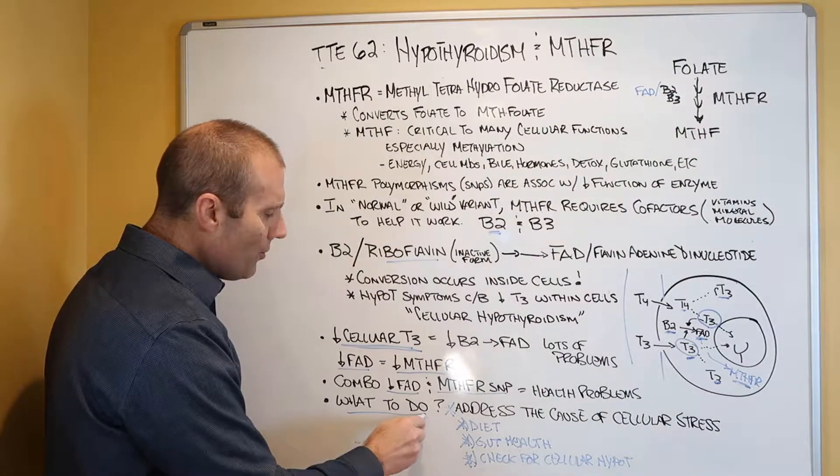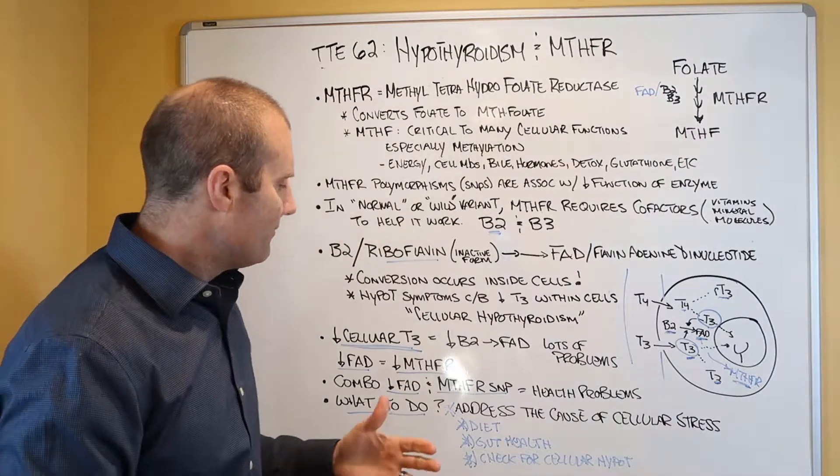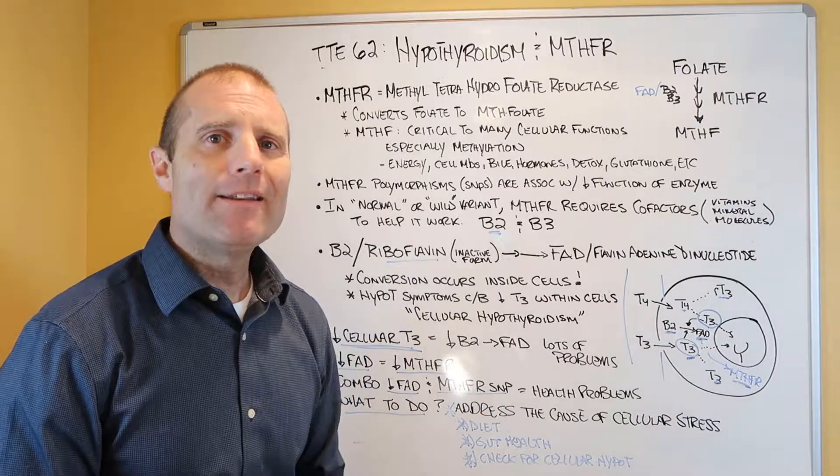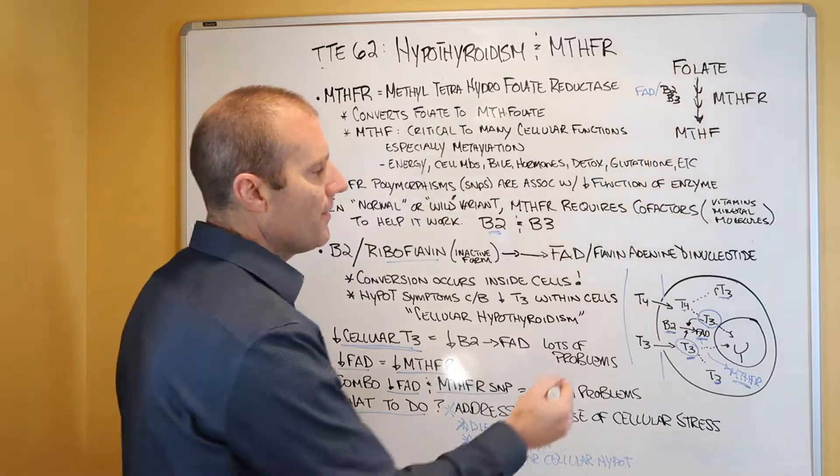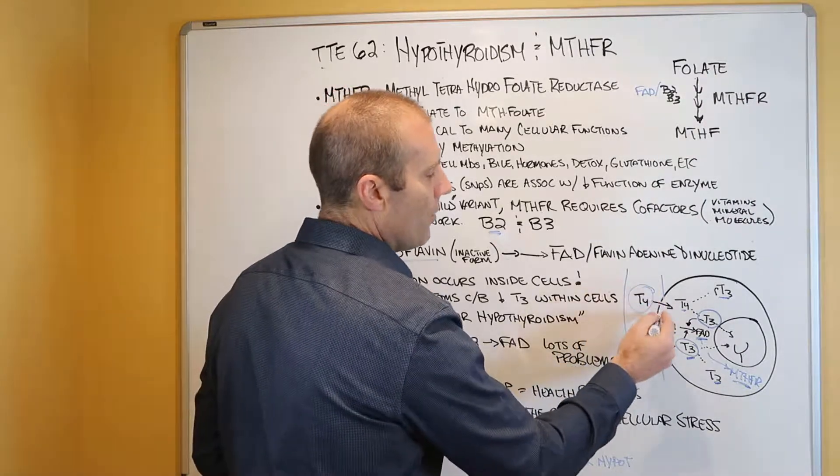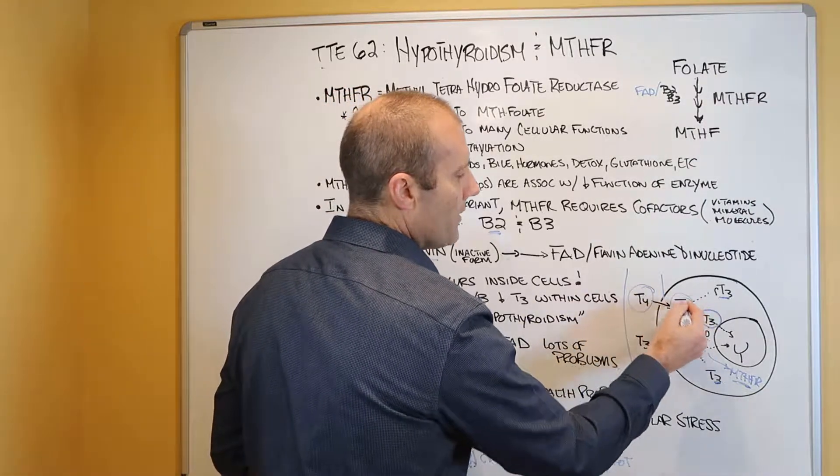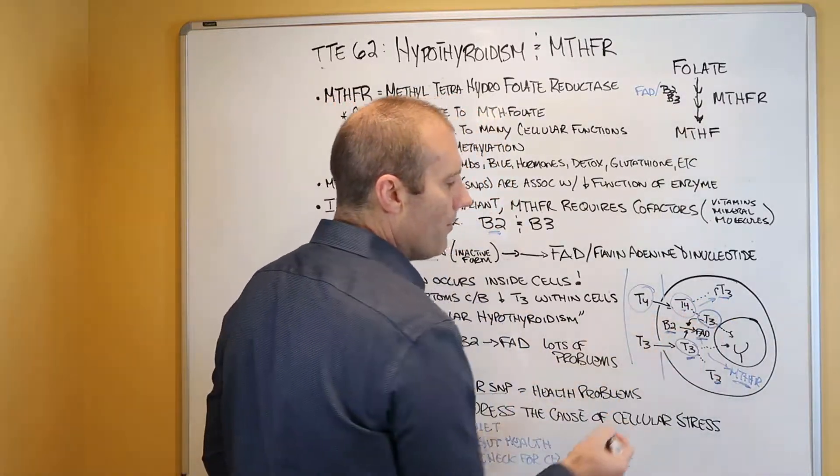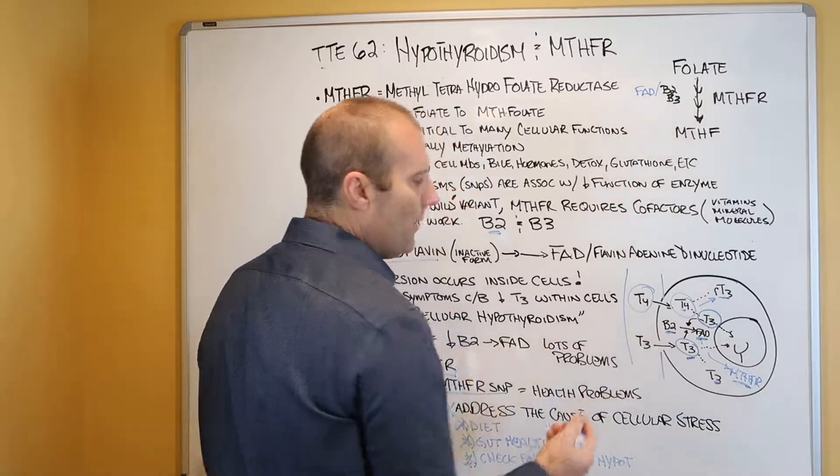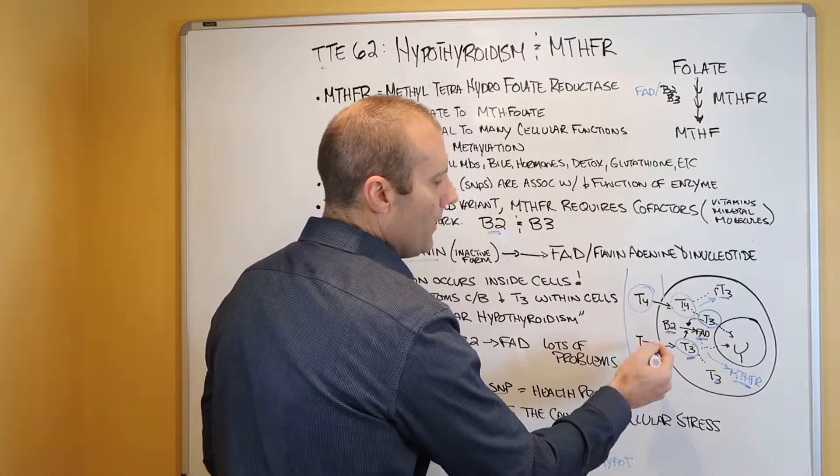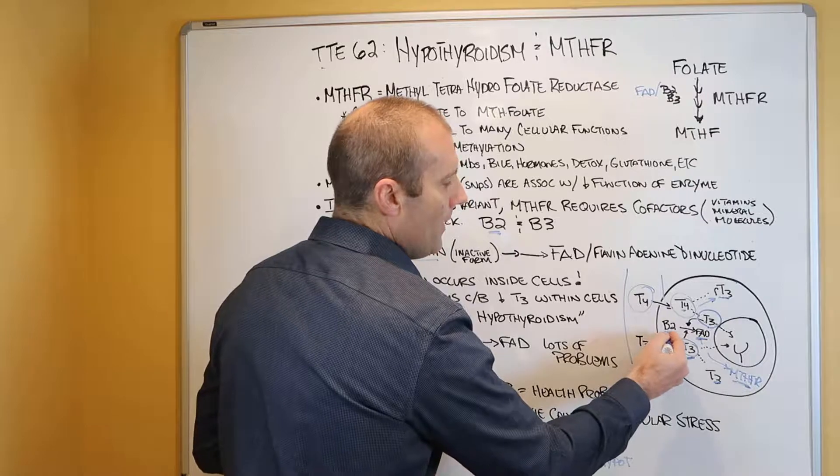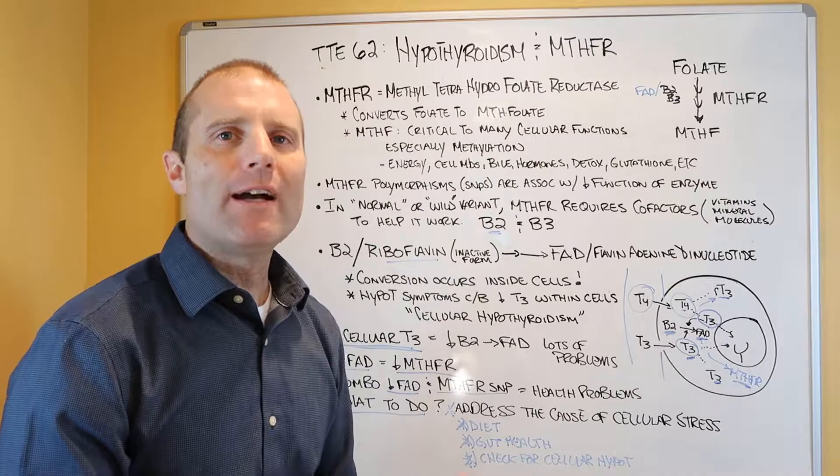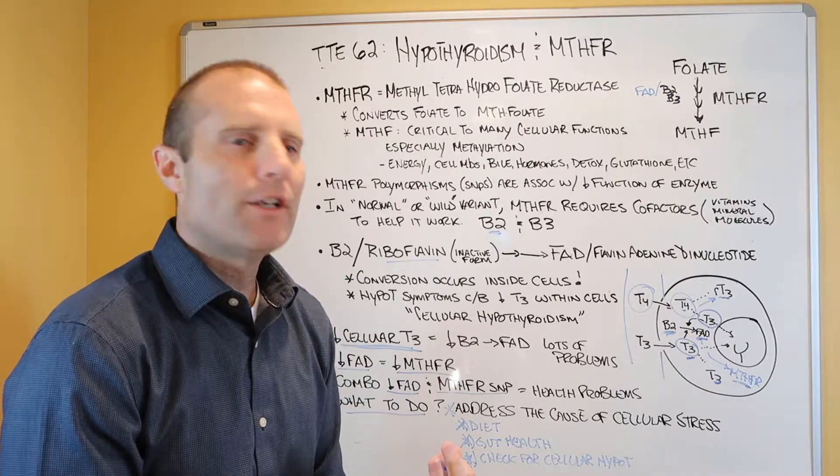What do you do? Do you just take more B2? Do you just take more T4? That's not the way to address this appropriately. Because if you just take more T4 and force more T4 into the cells, you're probably going to drive more reverse T3, not more T3. If you just take more B2 in your diet and you get more B2 absorbed in, if the B2 gets into the cells but you can't convert it to FAD, you're still not going to have the solution you're looking for.